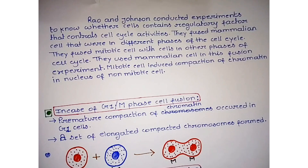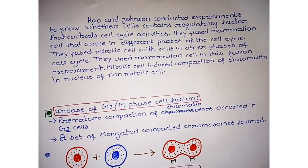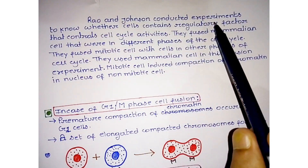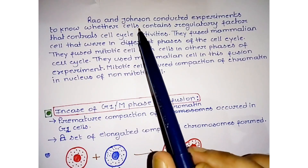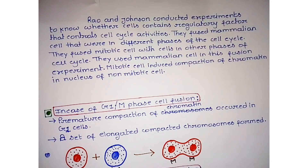Today we discuss fusion of different stages of the cell cycle. There are some fusion experiments by which we can determine that there are regulatory elements or proteins that control cell cycle activities. This is very important in CSIR NET. Rao and Johnson conducted experiments to know whether cells contain regulatory factors and whether the cell cytoplasm contains any regulatory protein or factor that controls cell cycle activities.